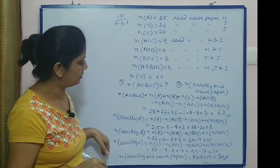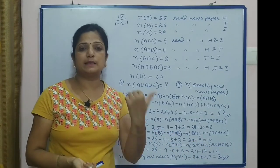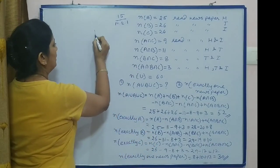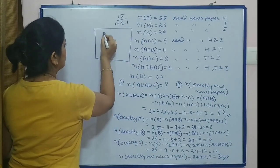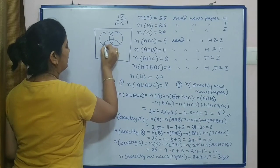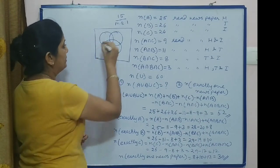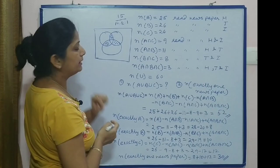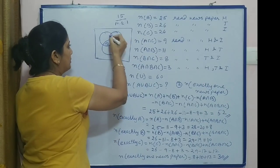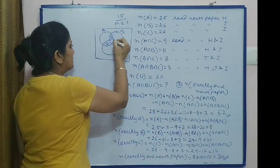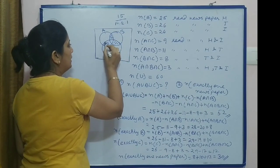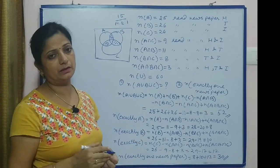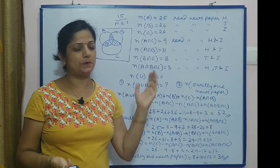If you need to find exactly 2, the meaning from the Venn diagram of 3 sets is: this portion, this portion, and this portion only. To find exactly 2, take the complete A∩B plus B∩C plus A∩C, and then minus 3 times the all-three intersection. This is the formula for exactly 2.